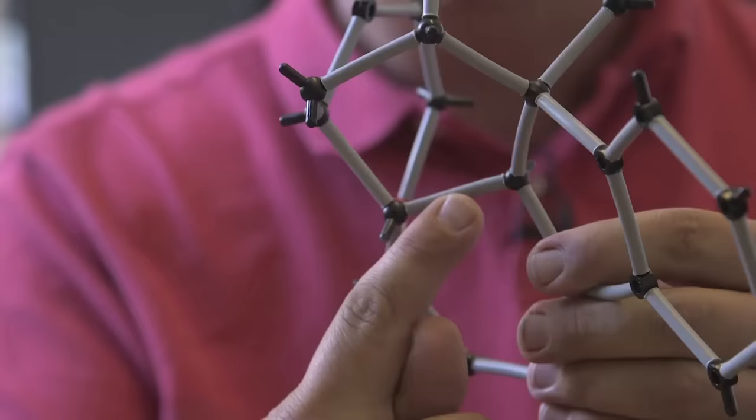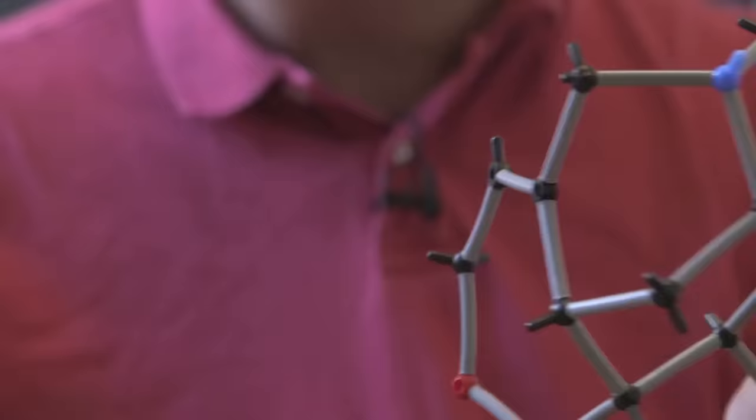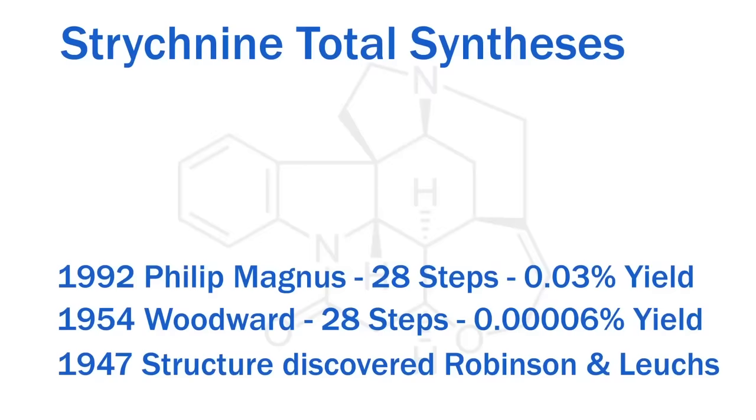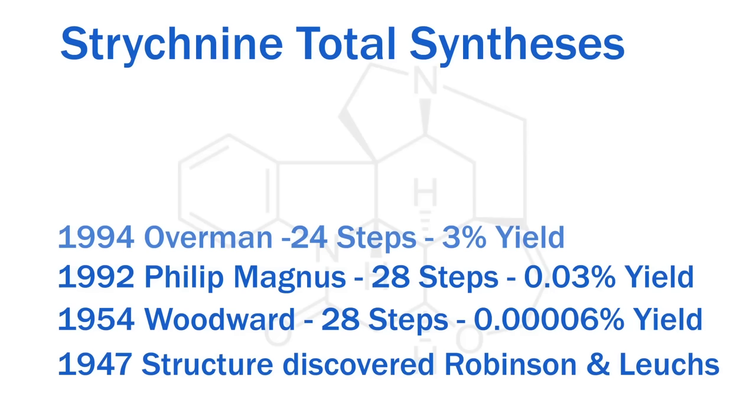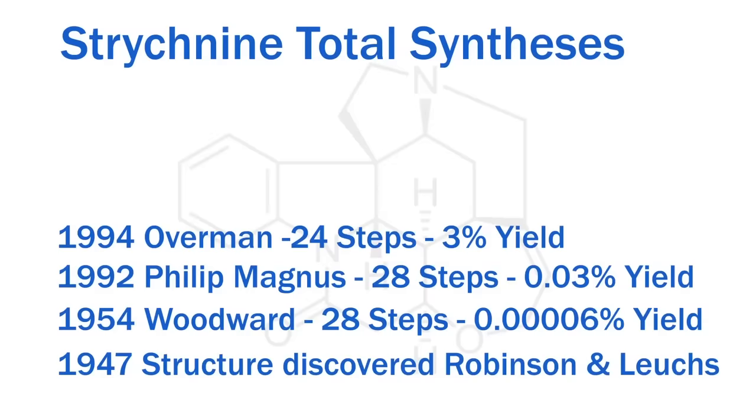Woodward had used the synthetic chemistry of the day, and 40 years had passed by the time Magnus came to doing it. In 1994 was the next synthesis, and that went up to 3% yield, using Larry Overman's chemistry. And these are all incredible. These are the rock stars of the organic chemistry world that are coming to play here. So, time moves on. 2007, Padua got it down to 16 steps, 2% yield.